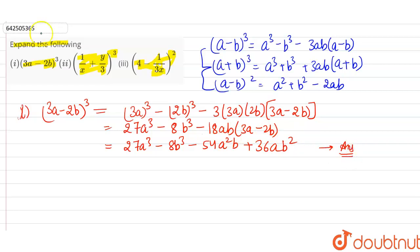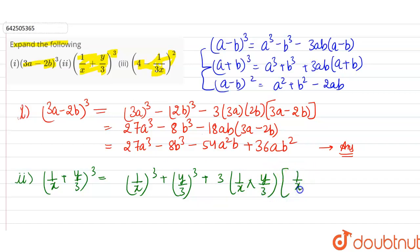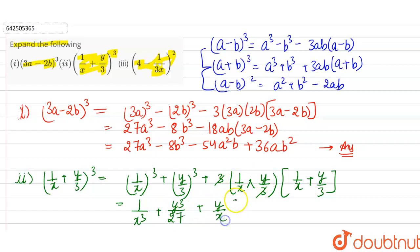The second part is (1/x + y/3)³. We use the second identity: (1/x)³ + (y/3)³ + 3 × (1/x) × (y/3) × (1/x + y/3). The 3 cancels with the 3 in the denominator, giving 1/x³ + y³/27 + (y/x)(1/x + y/3).